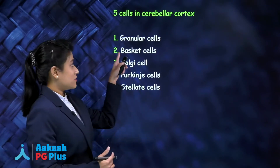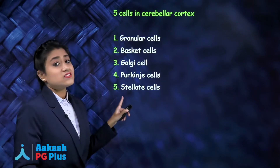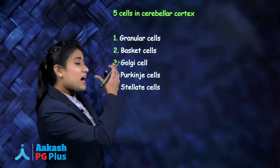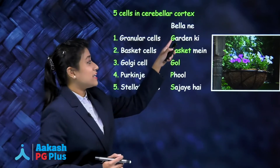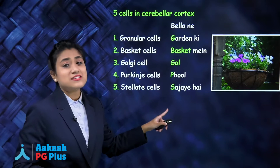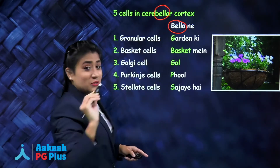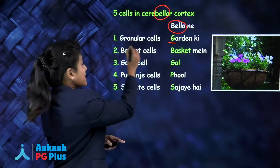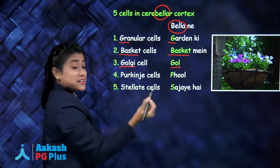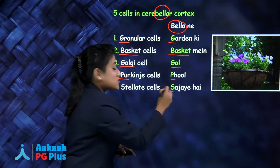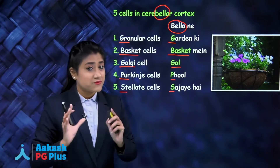The five cells of the cerebellar cortex are: granule cells (also called granular cells), basket cells, Golgi cells, Purkinje cells, and stellate cells. Write it down — it's very important. To remember all these cells, here is a mnemonic: 'Bela nae garden ki basket mein gol phool sajai hain.' Garden = granule cells, basket = basket cells, Gol = Golgi cells, P = Purkinje cells, and 'sajai hain' = stellate cells.